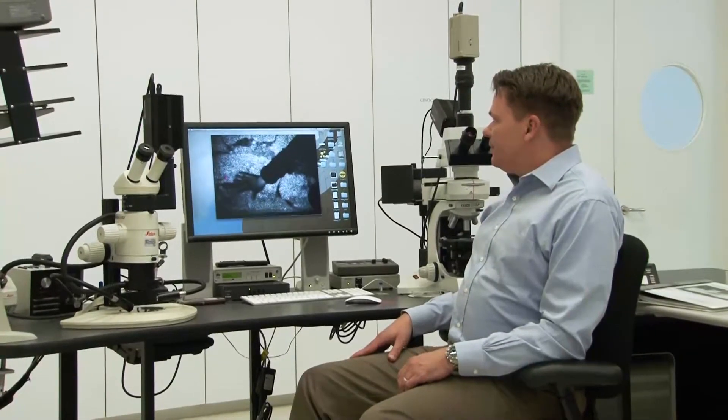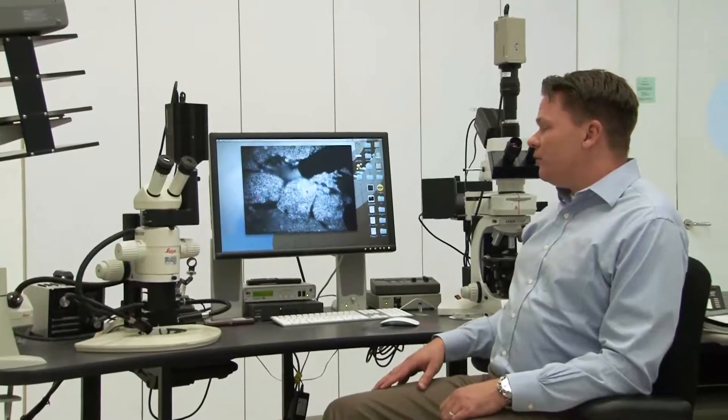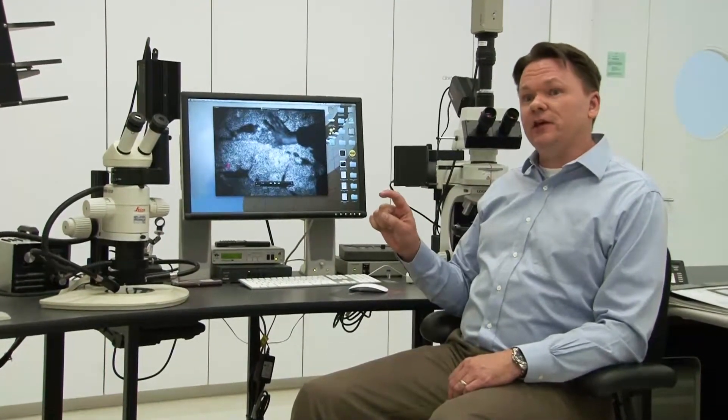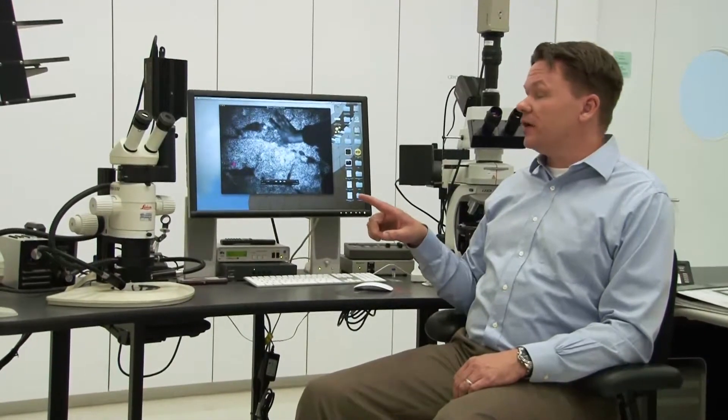Now, if this were the only way we could use this method, it really wouldn't be an advance over what conservators already use. Conservators generally use their finger to tell where a void is. They simply tap and feel or hear the void that they're looking for.